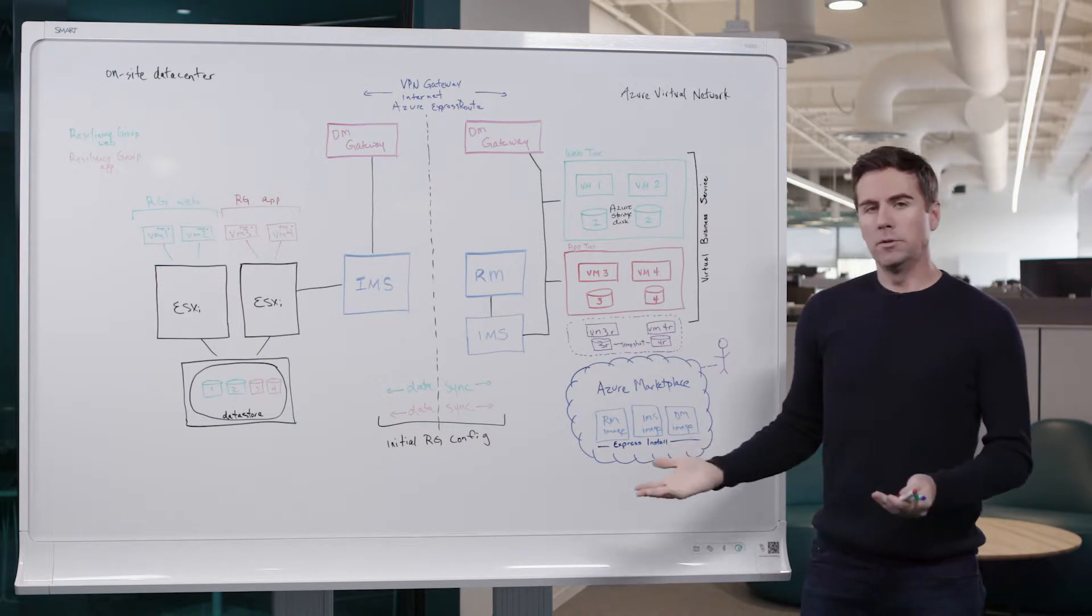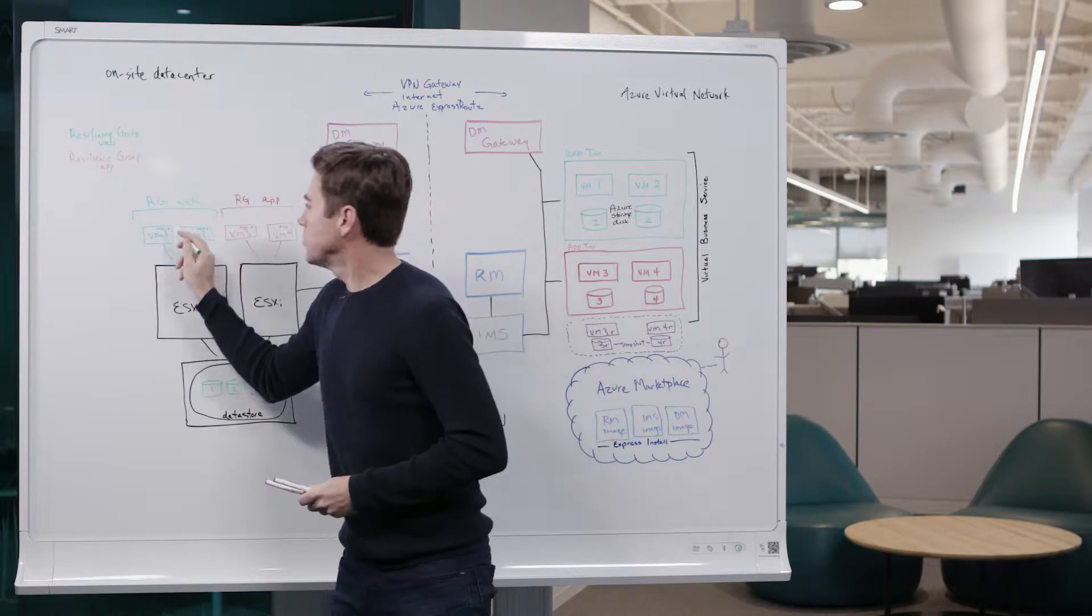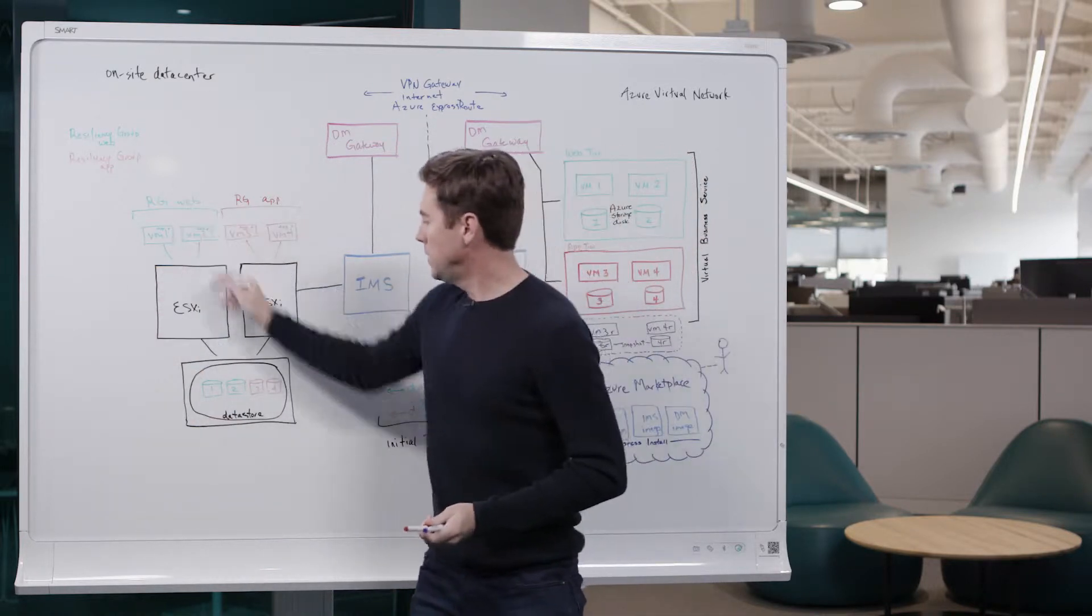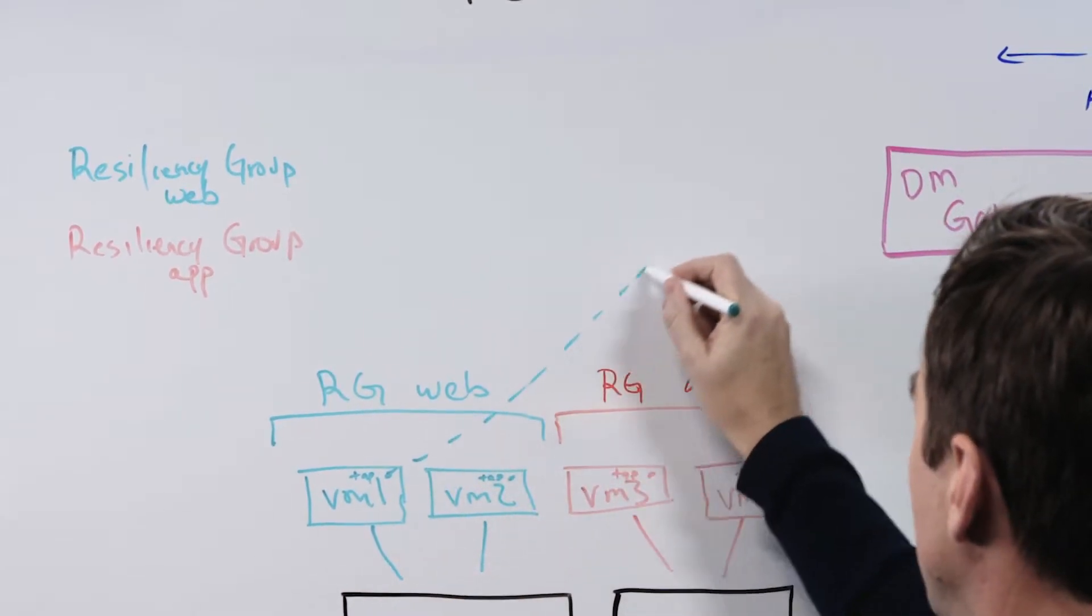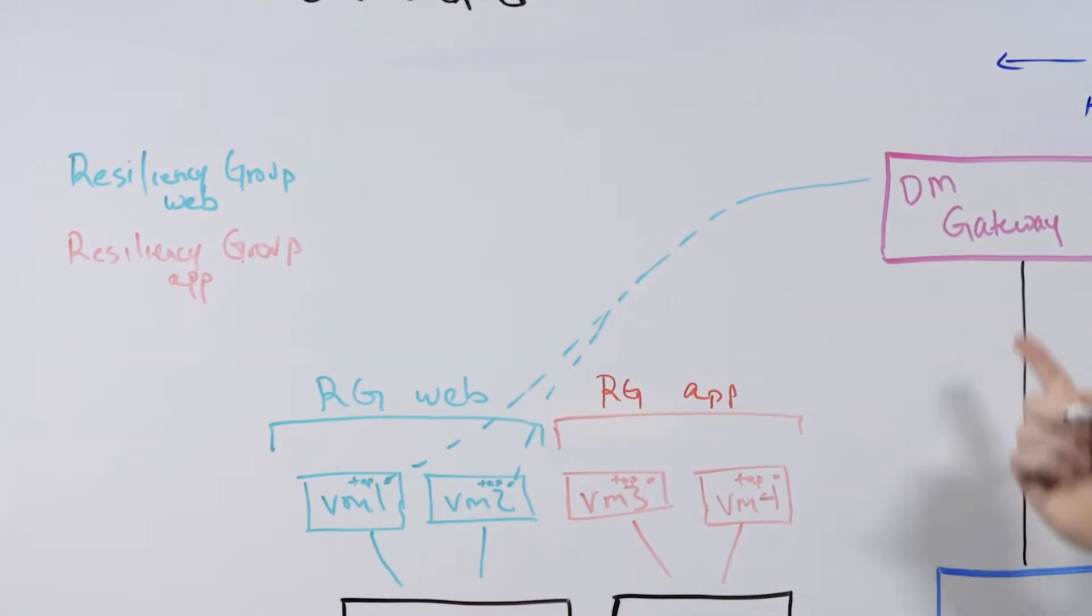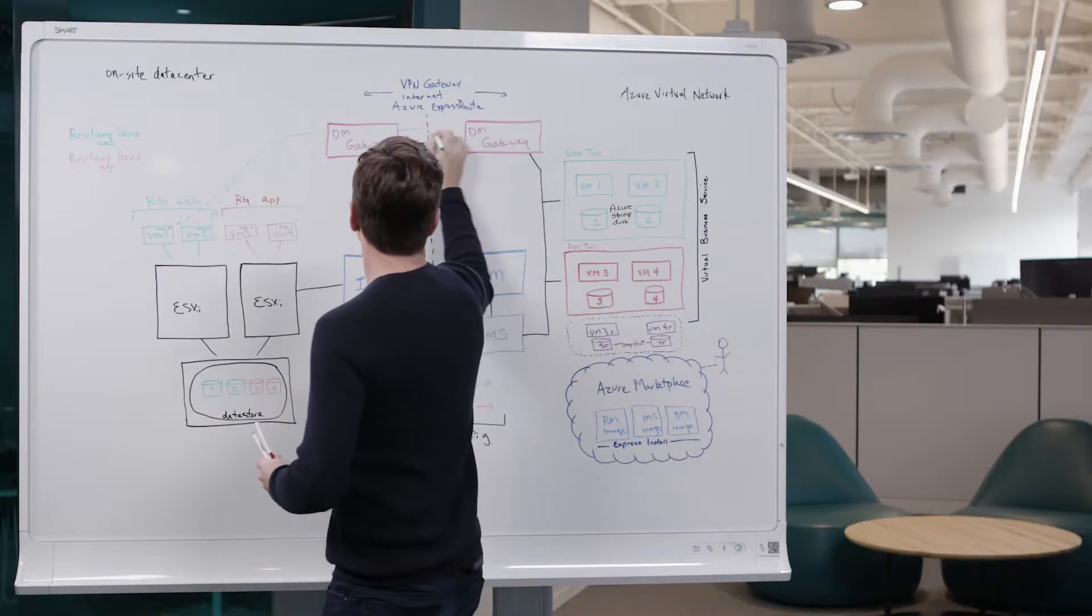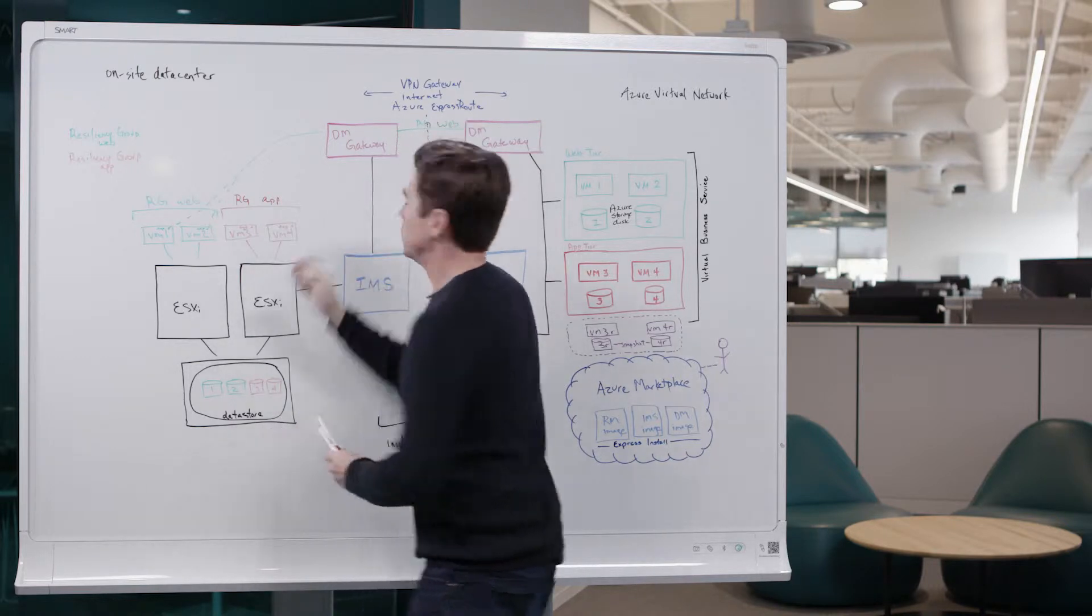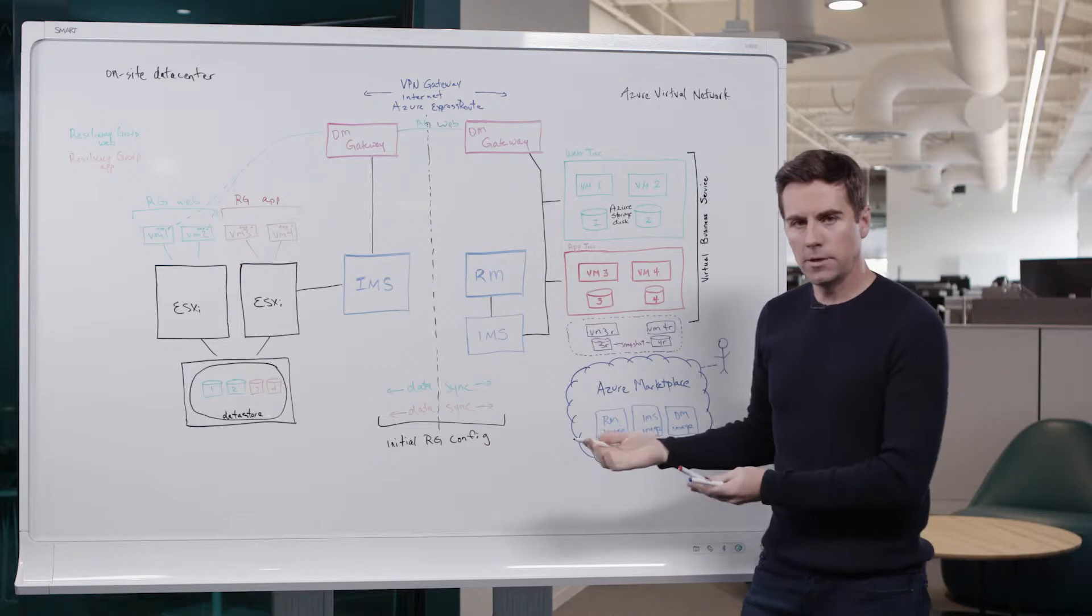So how does this actually work? We'll introduce a tap driver into the VM to capture I/O as it's moving from a VM down to its disk. So we can tap that I/O and send that I/O stream up here to the DataMover gateway, which can then replicate that data across to the gateway that it's paired with within the Azure cloud.